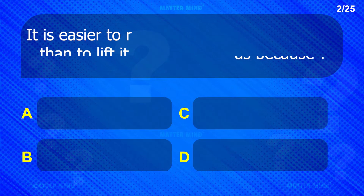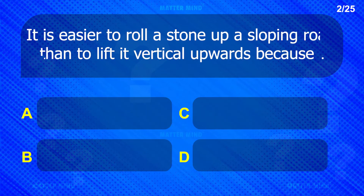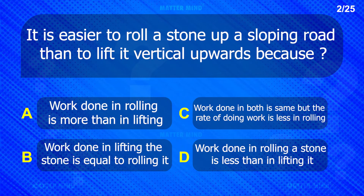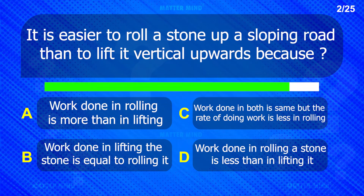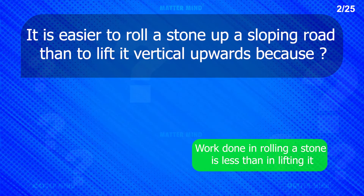It is easier to roll a stone up a sloping road than to lift it vertically upwards, because work done in rolling a stone is less than in lifting it.